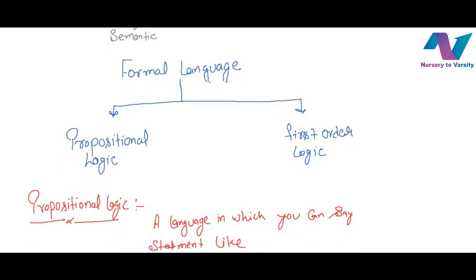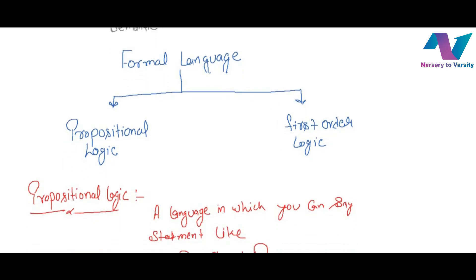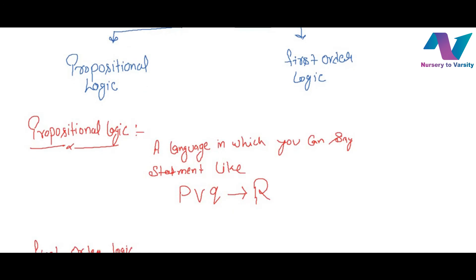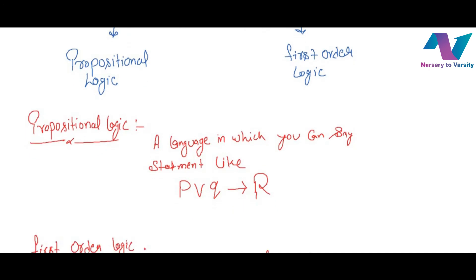In propositional logic, we can say a statement like P or Q implies R. This type of language has variables in the form of P, Q, R and connectives like or and implication. This type of language is called propositional logic.